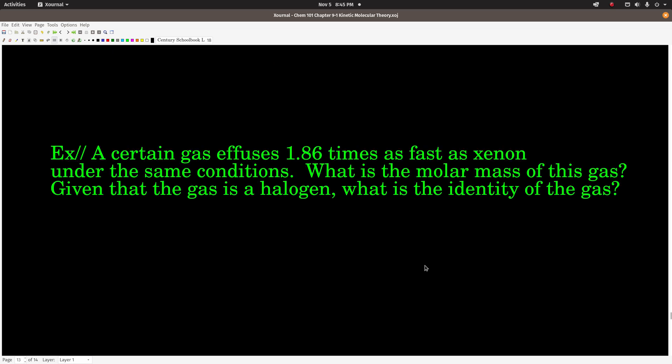All right, so now we come to the point where we do another example. So a certain gas effuses 1.86 times as fast as xenon under the same condition, so the same container, same temperature. What's the molar mass of this gas? Given that that gas is a halogen, which gas is it? All right, so why don't you guys go ahead and work this out yourself. When you get an answer, come on back.